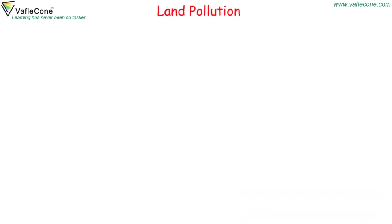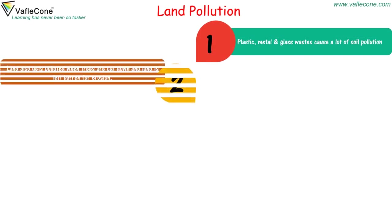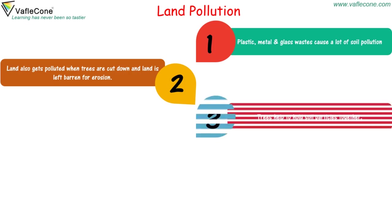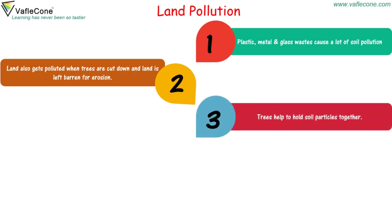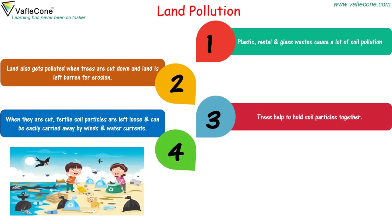Land pollution: plastic, metal, and glass waste cause a lot of soil pollution. Land also gets polluted when trees are cut down and land is left barren for erosion. Trees help to hold soil particles together. When they are cut, fertile soil particles are left loose and can be easily carried away by wind and water currents.